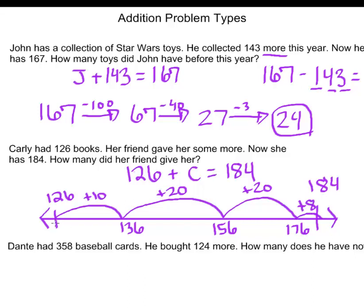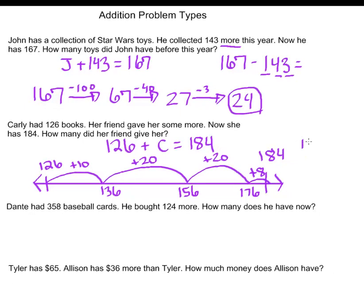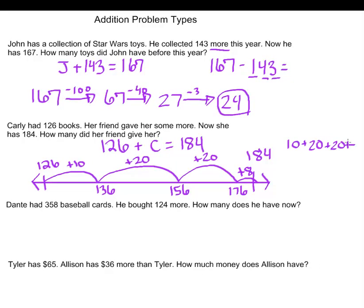So I have jumped from 126 using my number line to 184. How much did I jump in total? Well, first I added 10, then I added 20, another 20, and finally an 8. How much did I add altogether?